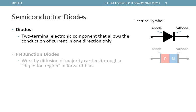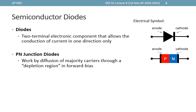First, we have PN junction diodes. These are created when interfacing P-type and N-type semiconductors, and thus the name PN junction diode. In a PN junction diode, the P-side acts as the anode, while the N-side acts as the cathode. PN junction diodes work by diffusing majority carriers through a depletion region in forward bias. We'll learn more on this on the next few slides.